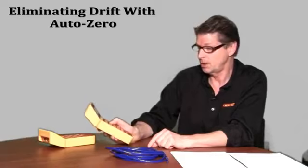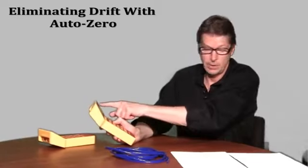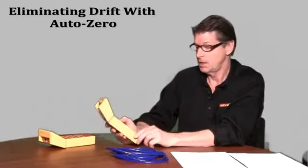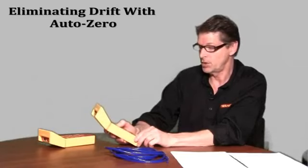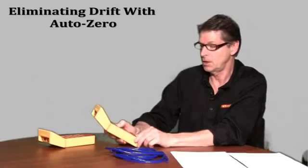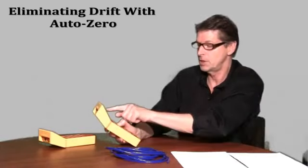Turn the AutoZero off by clicking the AutoZero key until off appears in the display. Set the time average to one second. Continually click it until one second appears in the display.